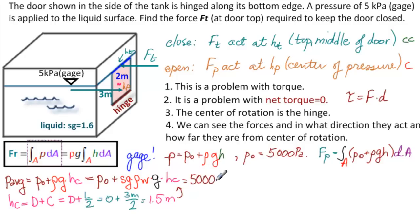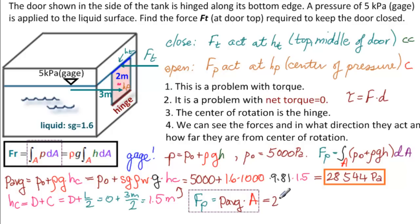So we can calculate P average: 5,000 plus 1.6 times 1,000 kilograms per meter cubed times 9.81 meters per second squared times 1.5 meters. Calculating, we get 28,544 pascals. And we know that Fp is equal to P average times the area. So that equals 28,544 times 2 times 3, equal to 171,264 newtons.